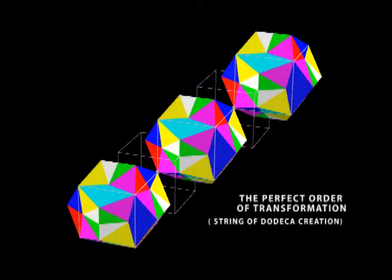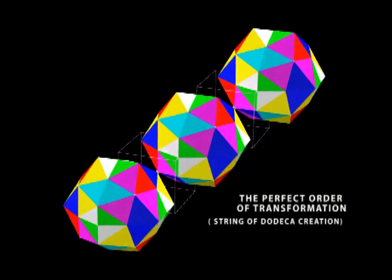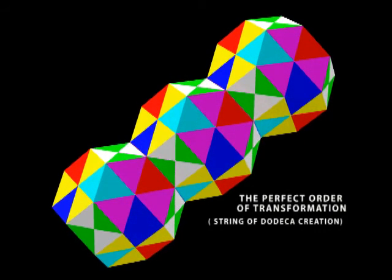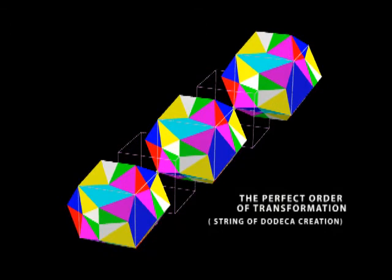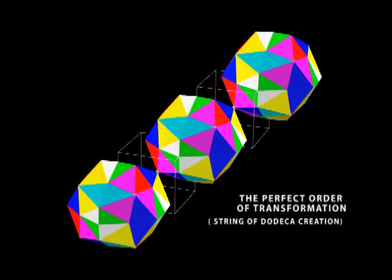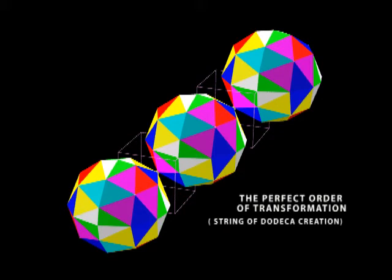So that we can have a non-stop string of spheres in any direction. Now you can see that I'm only using one string. There are four strings to each cube. So you can see this could get pretty complex. But I think it's a perfect order.